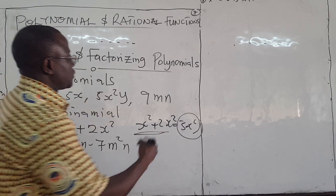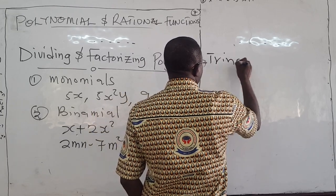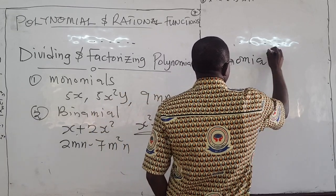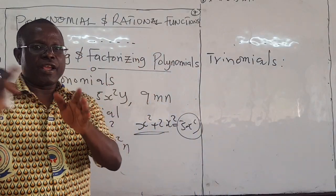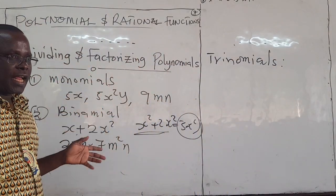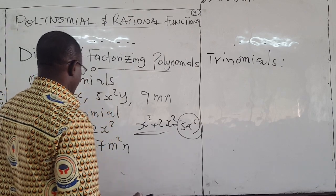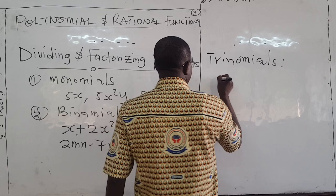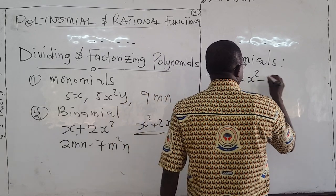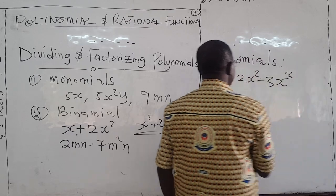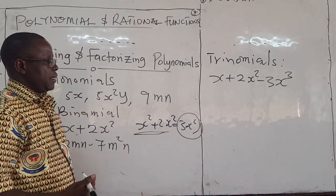And you have trinomials as well. You can imagine, trinomial. So, similarly, you have 3 terms that are not alike, which you can't combine. And so, if you take this guy, x plus 2x squared minus 3x cubed, that would form a trinomial.